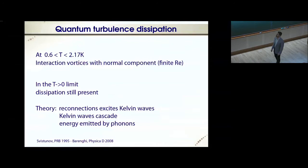Another difference between quantum and classical turbulence is dissipation. In the range of temperature between around 0.6 Kelvin and the lambda transition, the main dissipation mechanism in quantum turbulence is interaction of the vortices with the normal component, which has finite viscosity. However, in the T equals zero limit, the viscosity equals zero. The theory suggests that the main mechanisms are reconnection, which excites Kelvin waves, and then there is Kelvin wave cascade to smaller and smaller scales, and eventually the energy is emitted by phonons.